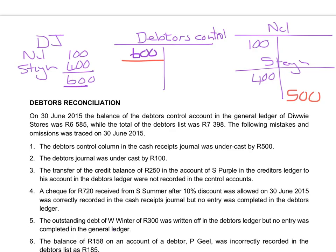First of all, I will ensure that I posted all the entries to the debtors ledger and transferred all the totals to the debtors control. If that is not the mistake, I'll have to go back to the journals and add up to see where an adding mistake was made. If I go back to the debtors journal and find an adding mistake of 600 rand, it means the mistake is only in the control account and will only be corrected in the control account.